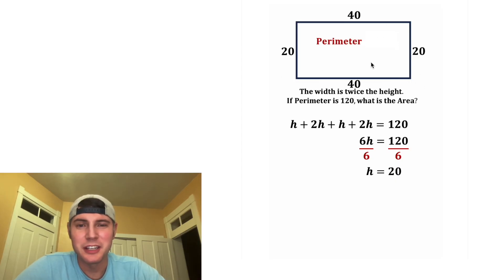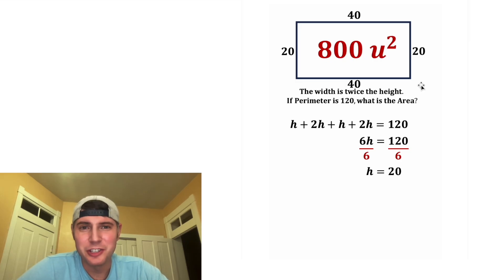40 + 20 + 40 + 20 gives us 120, and then the area will be 40 times 20, which is 800 units squared. That's the answer to the question. How exciting! So which method did you like more?